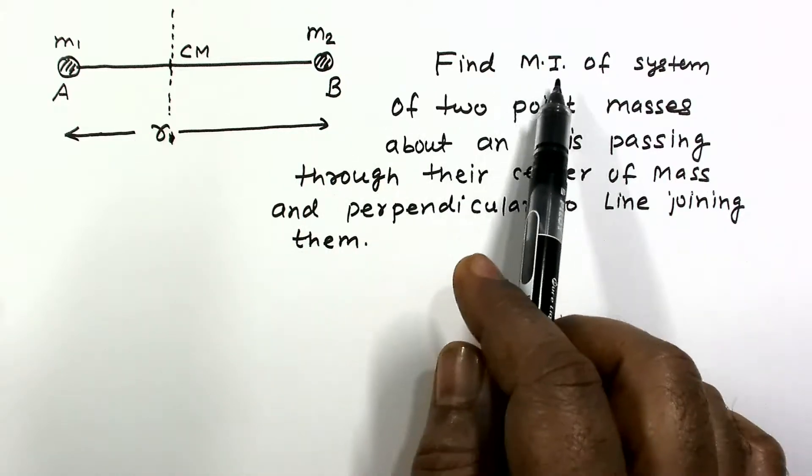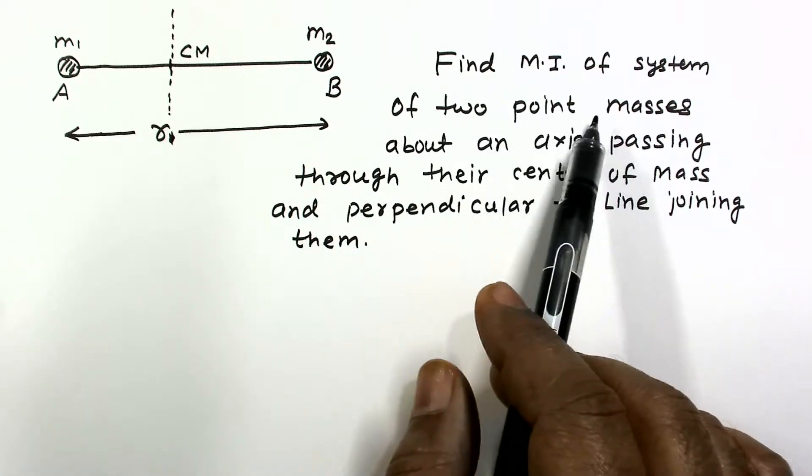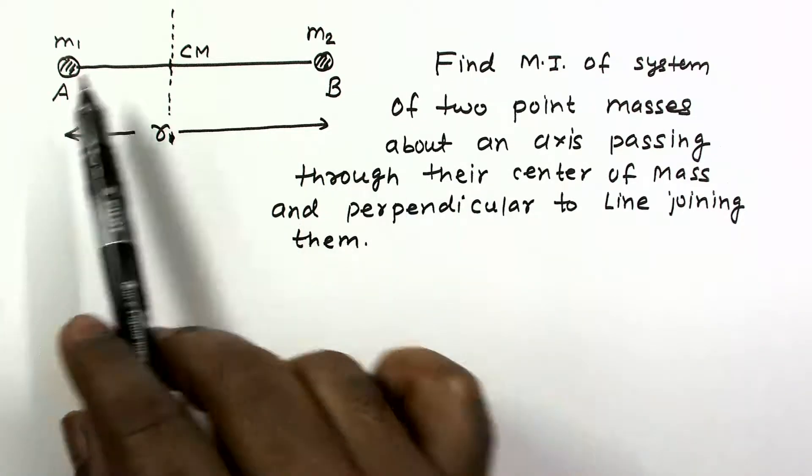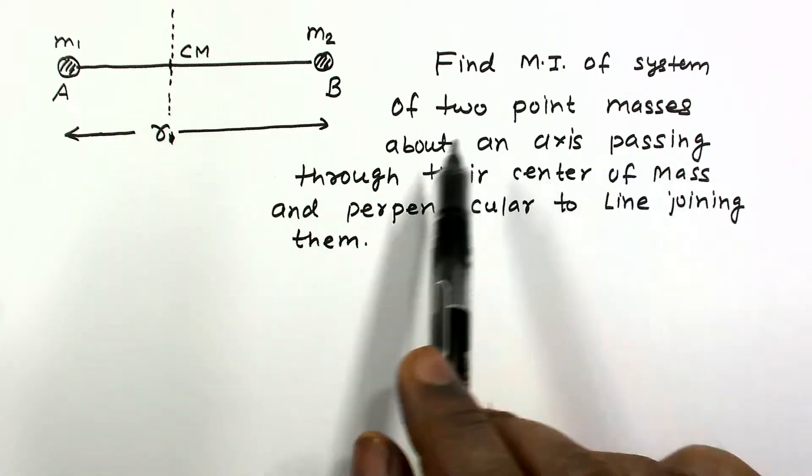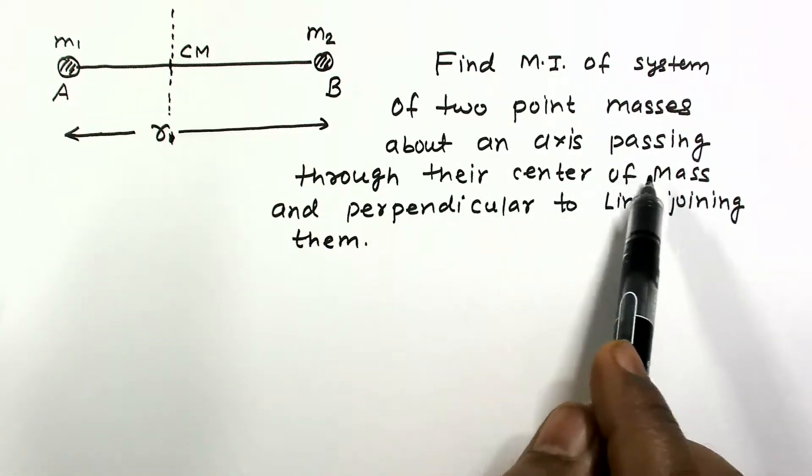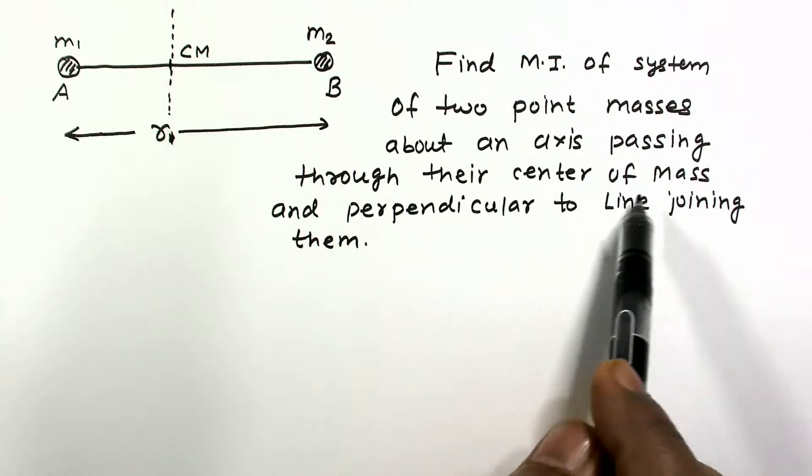This example: find moment of inertia of system of two point masses M1 and M2 about an axis passing through their center of mass and perpendicular to the line joining them.